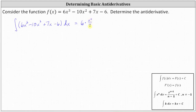And we'll include the plus c at the very end. Then we have minus the antiderivative of 10x², which is equal to 10 times the antiderivative of x². Notice now n = 2, and therefore the antiderivative is x³ divided by 3.